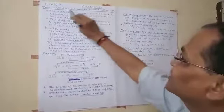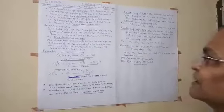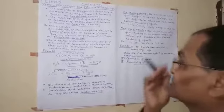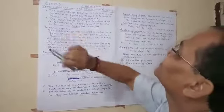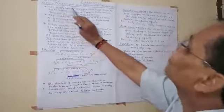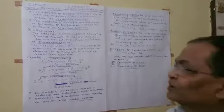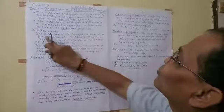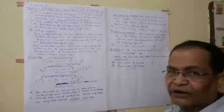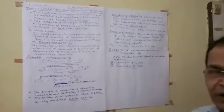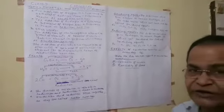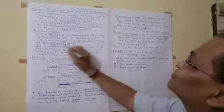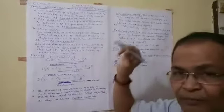These reactions are very, very important. First, oxidation reaction: the addition of electronegative elements or group of elements is oxidation, and removal of electropositive elements or a group of elements is also oxidation.